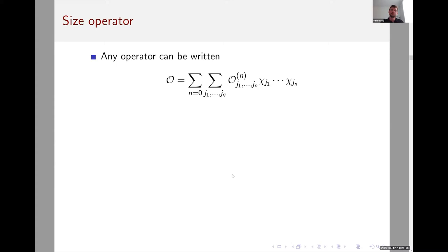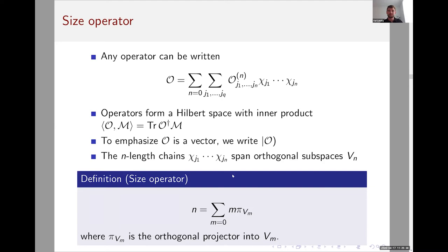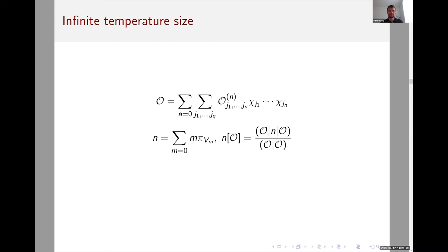There's an alternate definition that will be useful. It's equivalent to the previous one. Operators form a Hilbert space with this trace inner product. When I want to emphasize that O is a vector in this space, I'll write it with this curly Dirac ket. The strings of length n of Majorana fermions span orthogonal subspaces in this trace inner product. So there's another simple definition of this size operator in this Hilbert space. When acting on the subspace of operators that span by strings of length n, its eigenvalue is n.